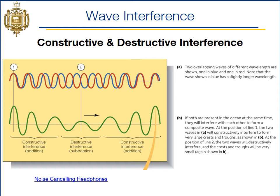A great example of destructive interference is noise-canceling headphones — that's what they strive to do with sound waves: cancel out the noise by actively creating a wave that's exactly opposite of the sound.